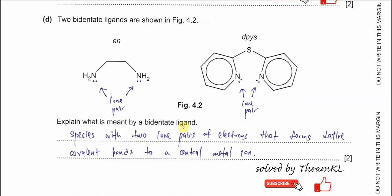Part D: Two bidentate ligands are shown in Figure 4.2, En and Dpys. Explain what it means by bidentate ligand. It's very easy. When it's a bidentate ligand, it must have two donor atoms, and the two donor atoms must have a lone pair. En has two nitrogen lone pairs, and Dpys also has two nitrogen lone pairs. So this is a bidentate ligand: species with two lone pairs of electrons that form dative bonds with the central metal ion.